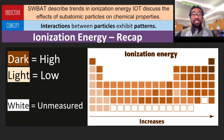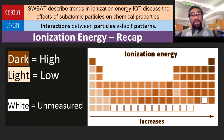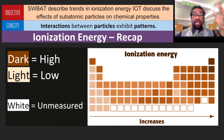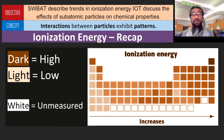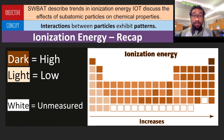Here's the recap on ionization energy. The dark regions on the periodic table represent regions of high ionization energy, while the light regions represent elements that have low ionization energies. The ionization energy increases from left to right, and it decreases from top to bottom. The elements with the highest ionization energy are on the top right, and the elements with the lowest ionization energy are on the bottom left. The white regions represent elements that have unmeasured ionization energies — they're radioactive and don't last long enough to take valuable measurements from.